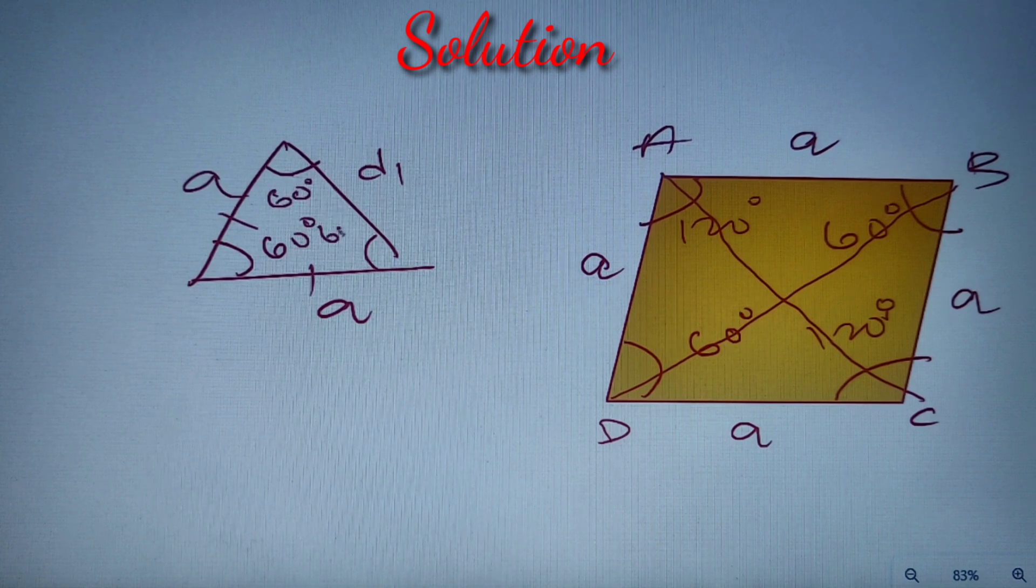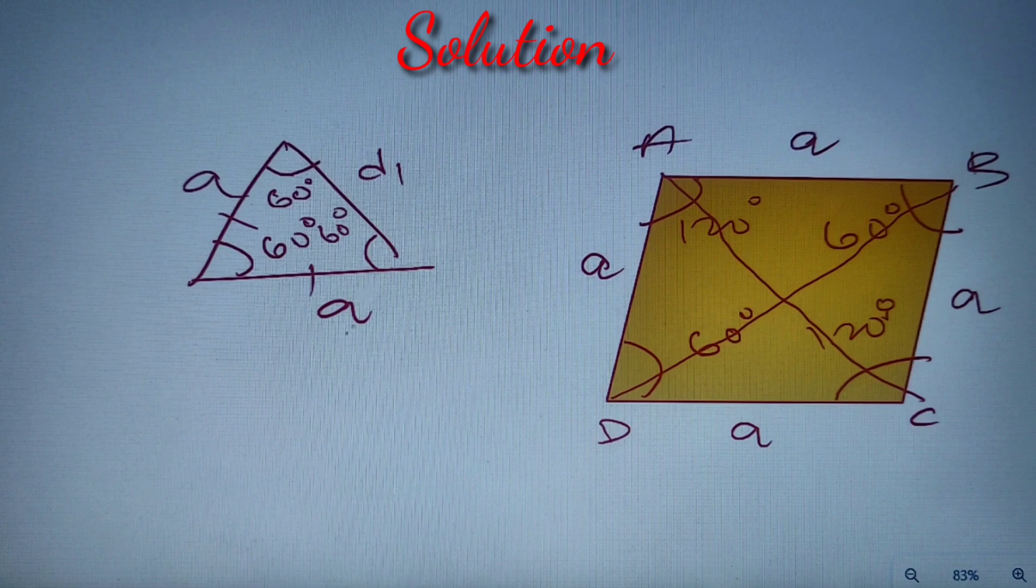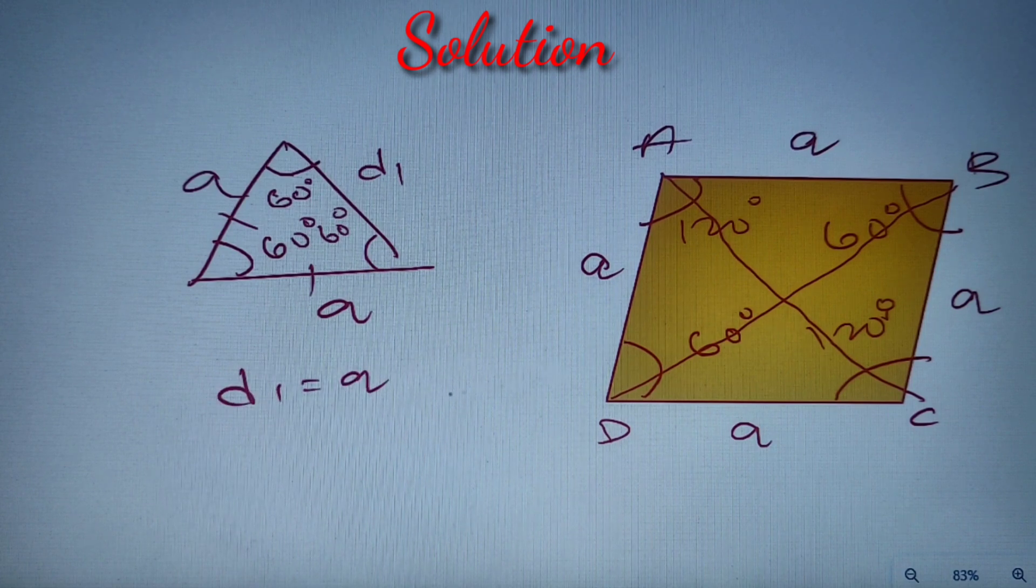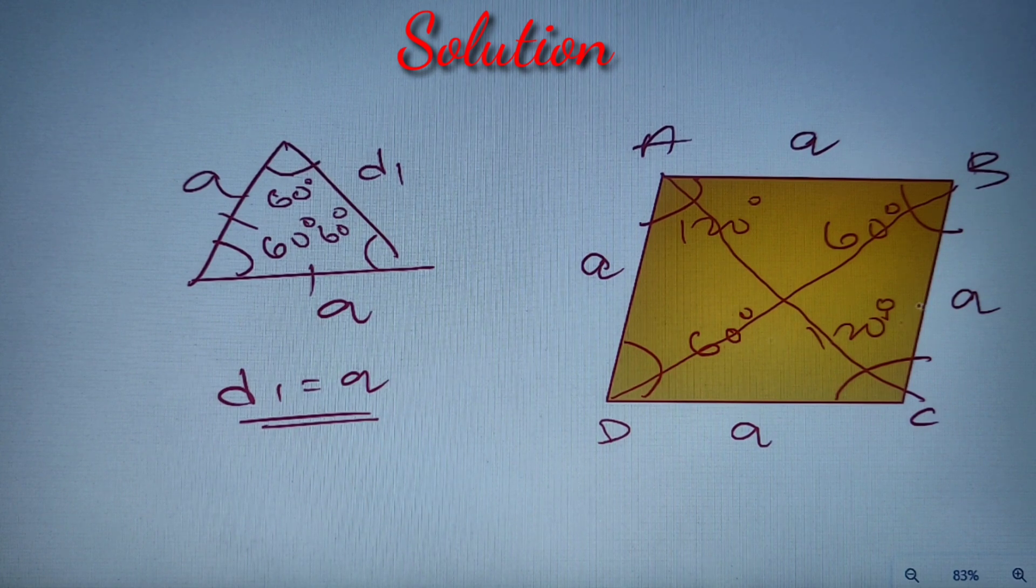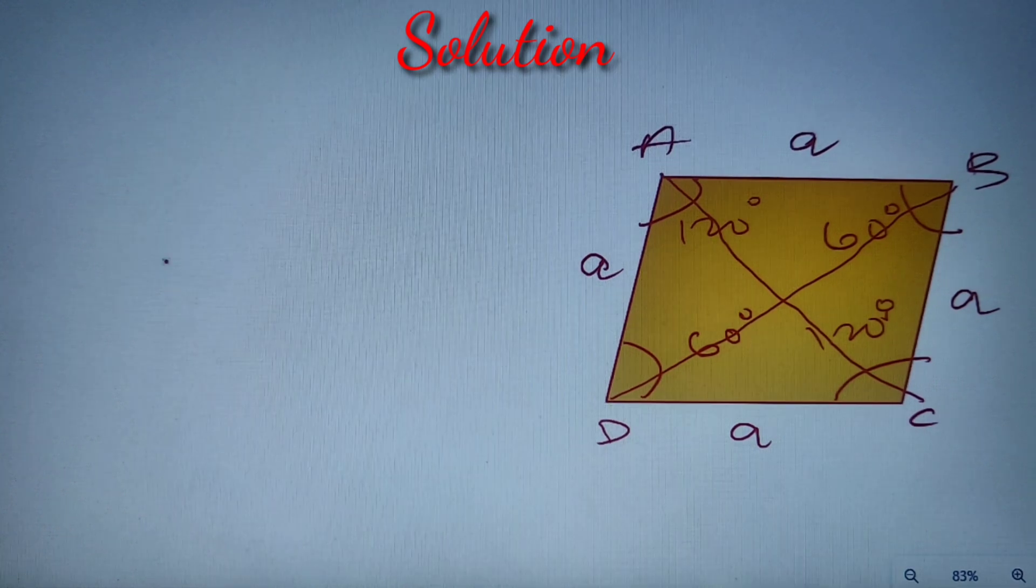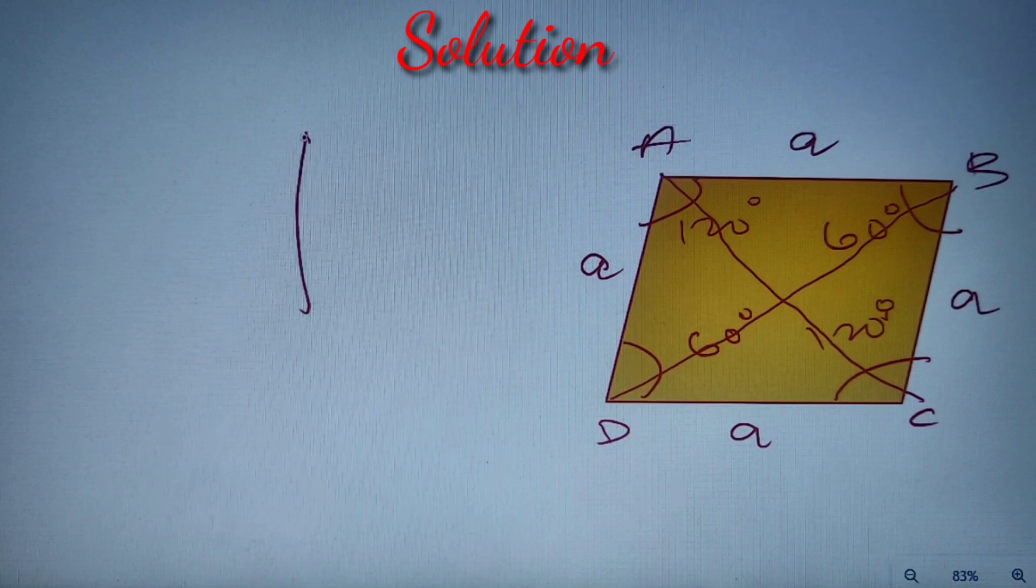So we have got this triangle as an equilateral triangle, so we can say that D1 is equal to a. Now we don't know that D1 is shorter or longer but we can take that D1 is equal to a. And now let's find D2.